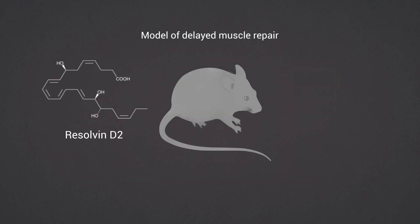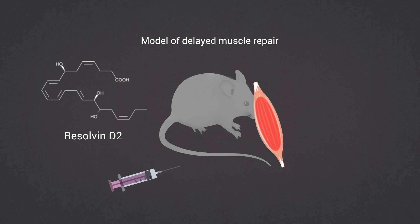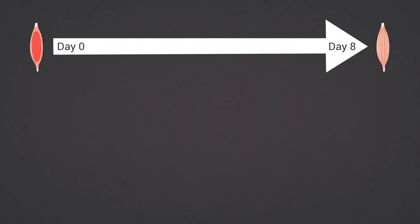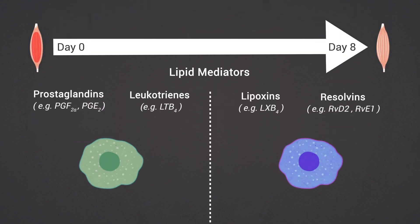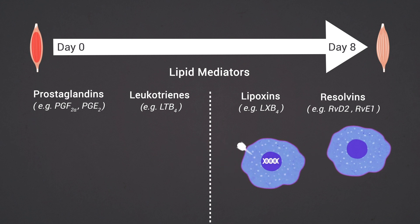Resolvin D2 promotes the phenotypic transition from inflammatory to reparatory macrophages in vivo. Its intramuscular administration results in functional improvement and recovery of the regenerating muscle in a model of delayed muscle repair. Taken together, our results reveal dynamic lipid mediator signatures of inflammatory and tissue-reparative immune cells, and demonstrate that macrophages are both sources and sensors of lipid mediators that potentially facilitate phenotypic transitions.